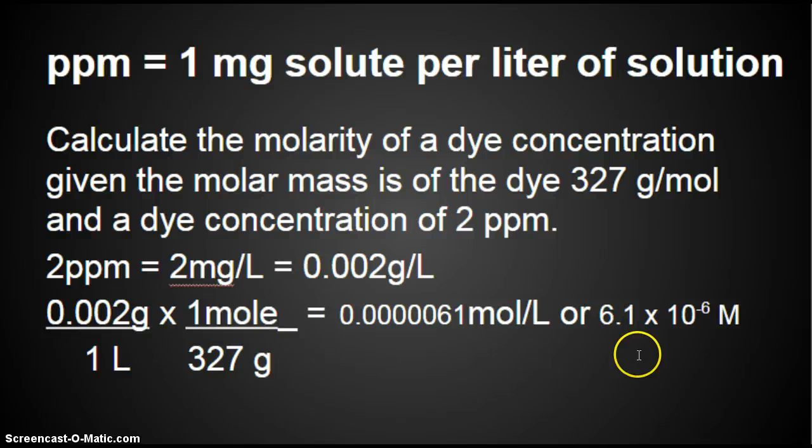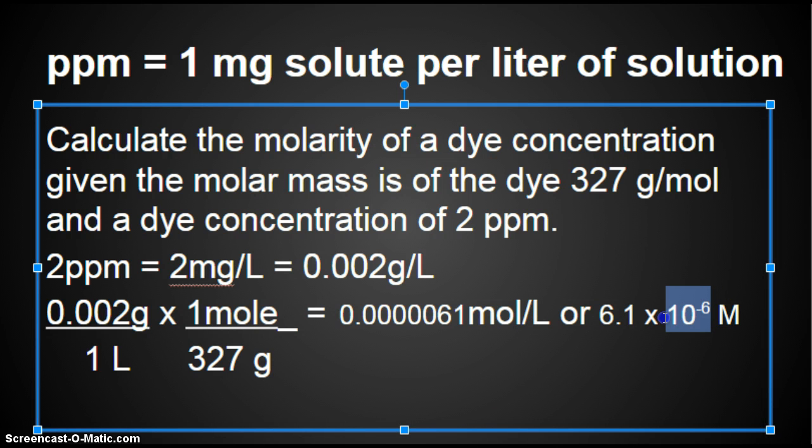We get this from scientific notation by how many places we move the decimal. So 1, 2, 3, 4, 5, 6. We stop here because we have one number that's not a zero in front of the decimal. So it's 6.1. We moved it 6 hops, so it's to the 6th, and our starting number was less than 1, so it is to the negative 6th.